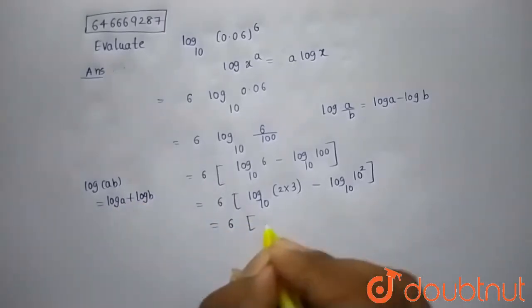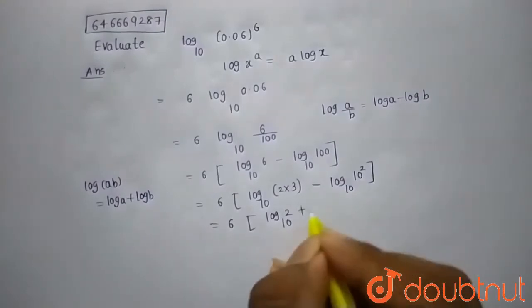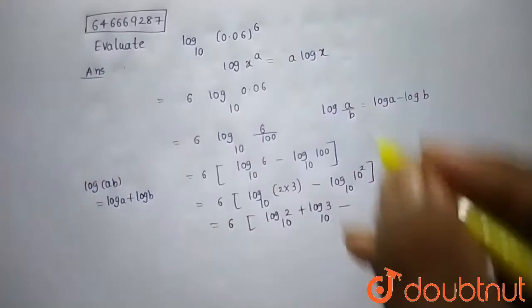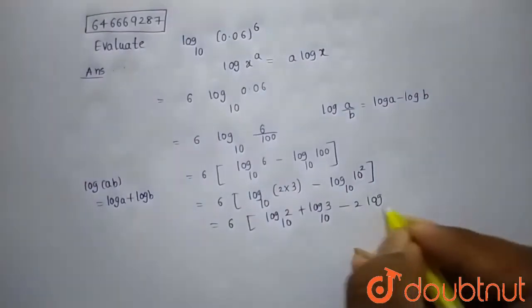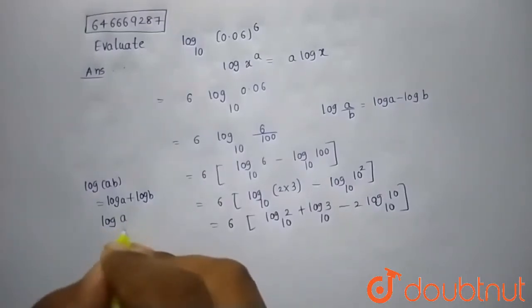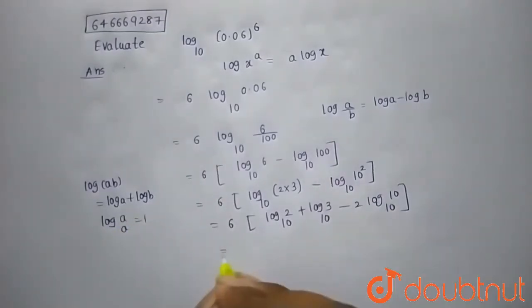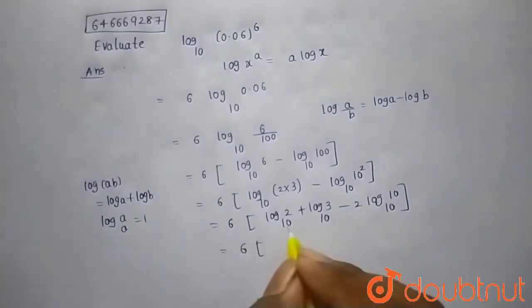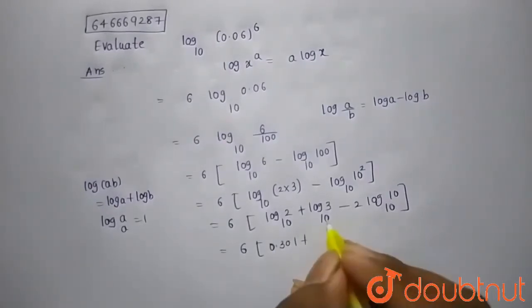So by using this I can write this as log 2 to the base 10 plus log 3 to the base 10 minus, by using this property I can write this as log 10 to the base 10. And we know that log a to the base a value is 1 so this will be 1 and the value of log 2 to the base 10 will be 0.301.